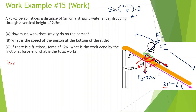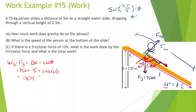Work of gravity equals force of gravity times displacement times cosine of theta. Force of gravity is 750 N, displacement is 5 meters down the slide, and the angle between them is 60 degrees. So 750 times 5 times cosine of 60 gives us 1,875 joules. That should be positive because gravity is helping to move this person down the hill.